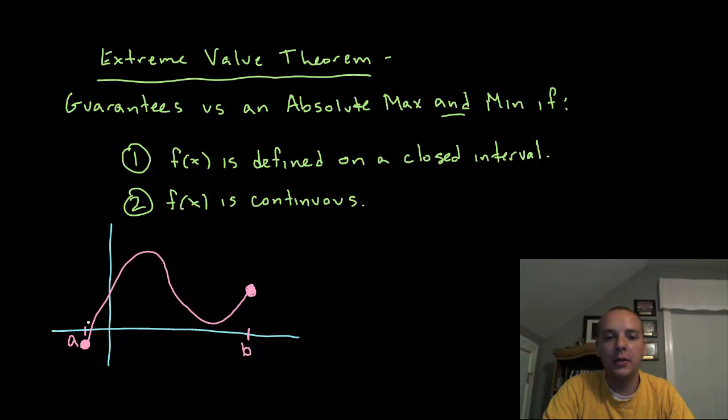We can tell why just based on this picture I've drawn here. I've got the function defined on a closed interval, and what this is saying in a subtle way is that the function will be defined on these endpoints, because remember absolute maxes...